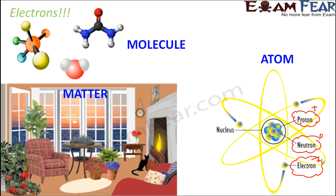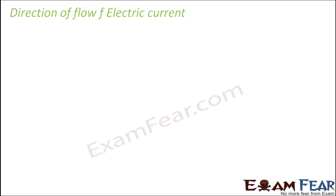We won't go into the full structure of the atom here, as that is covered in higher classes. For now, understand that matter is made up of molecules, molecules are made up of atoms, and atoms are made up of protons, neutrons, and electrons. It is the flow of these electrons that constitutes electric current. Since every object around us contains electrons, any object can be a source of electrons.